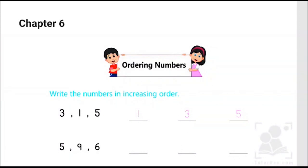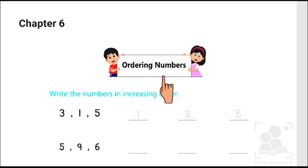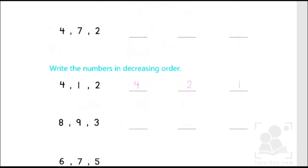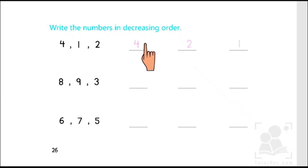Hi kids! In today's video we are going to learn mathematics chapter number 6, which is about ordering numbers. When we say ordering numbers, it means the logical arrangement of digits or counting numbers. In this chapter we are going to learn two concepts: increasing order of numbers as well as decreasing order of numbers.